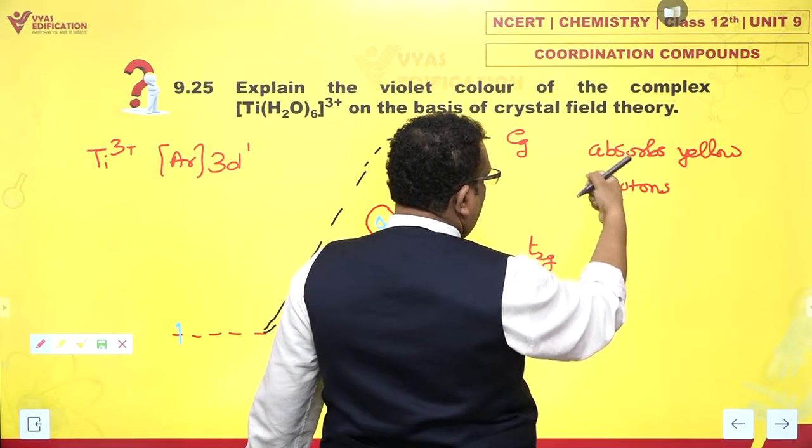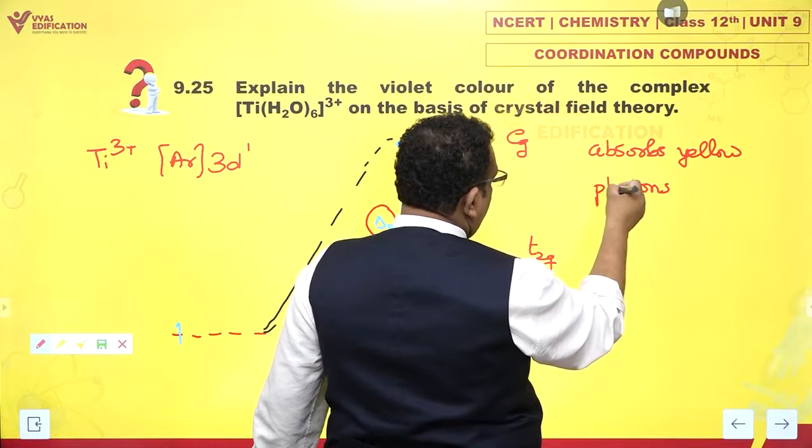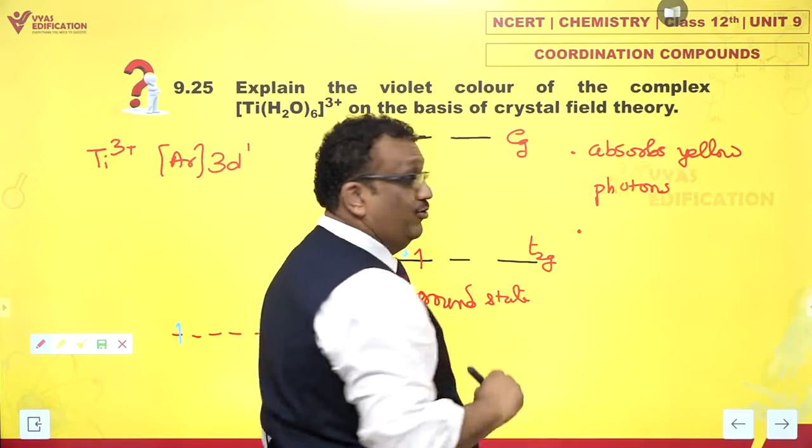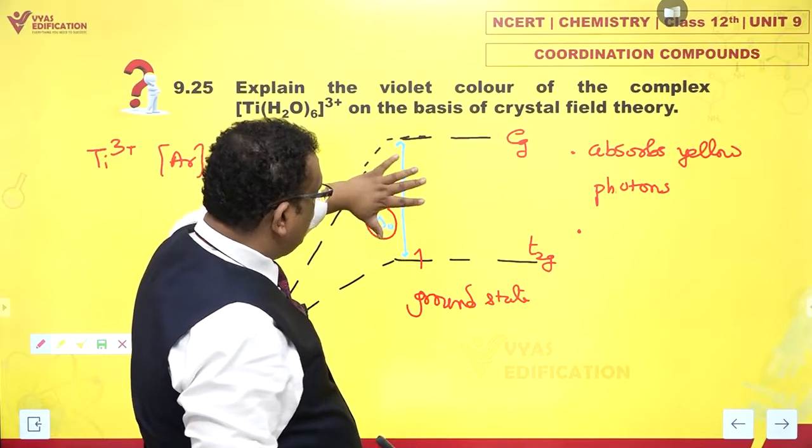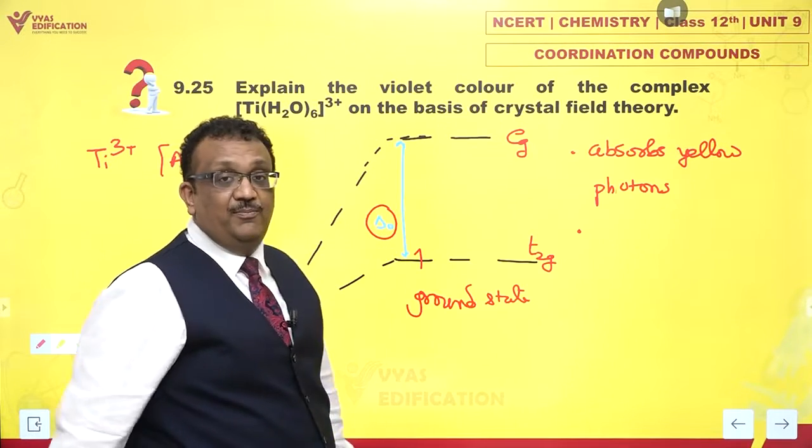The color appears violet because it absorbs yellow-colored photons. The energy of these photons corresponds to the crystal field splitting parameter.